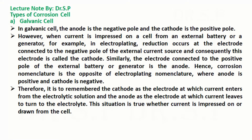However, when current is impressed on a cell from an external battery or a generator, for example in electroplating, reduction occurs at the electrode connected to the negative pole of the external current source, and consequently this electrode is called the cathode. Similarly, the electrode connected to the positive pole of the external battery or generator is the anode.